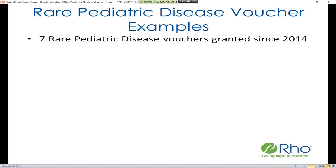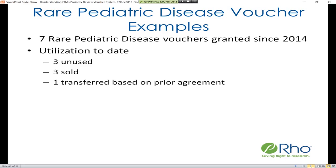Of these seven vouchers, three remain unused. Three have been sold between companies and were included in the previous slide showing sale prices. One had an agreement negotiated ahead of time whereby the company awarded the voucher transferred it to another company based on that prior agreement.